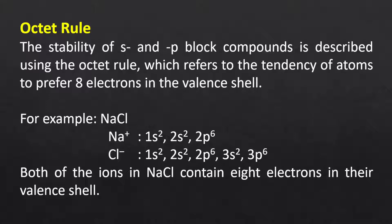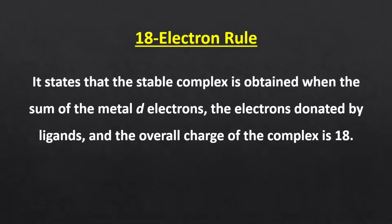In a similar way, the stability of organometallic compounds can be determined using the 18 electron rule. It involves Ns2, (N-1)d10, Np6 electronic configuration, which helps in determining the stability of transition metal based organometallic compounds. It is stated that a stable complex is obtained when the sum of the metal d electrons, the electrons donated by the ligand, and the overall charge of the complex is 18. This is how the metal achieves the same electronic configuration as the noble gas in the period.